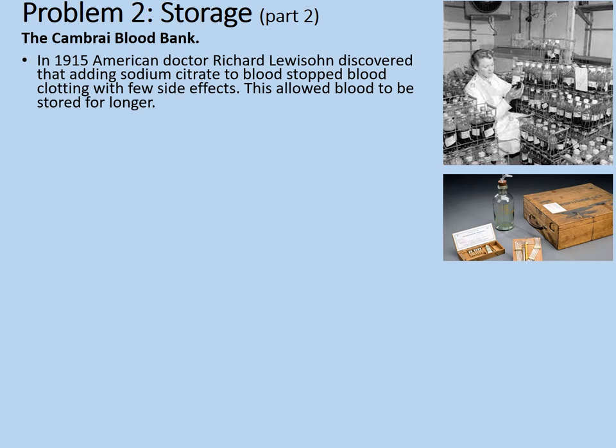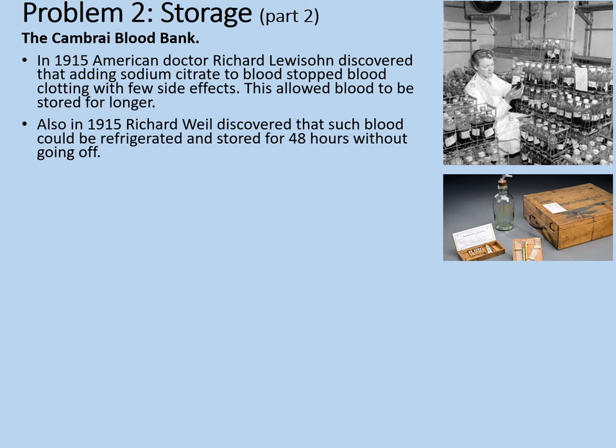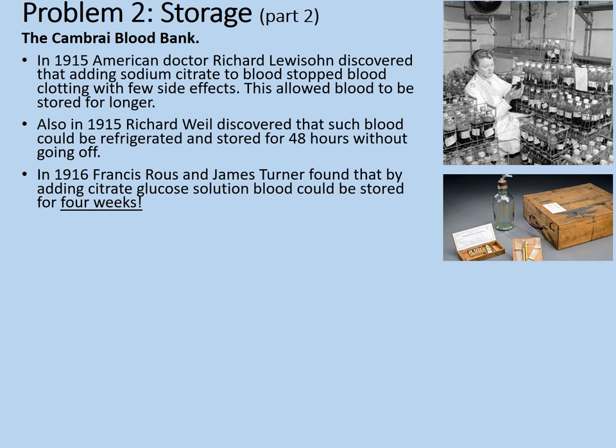Also in 1915, Richard Weil discovered that such blood could be refrigerated and stored for 48 hours without it going off. In 1916, Francis Rous and James Turner found that by adding citrate glucose to the solution, blood could be stored for four weeks. So between 1915 and 1916, they not only found a way of stopping the blood coagulating, but found ways of preserving it in a useful state for much longer.